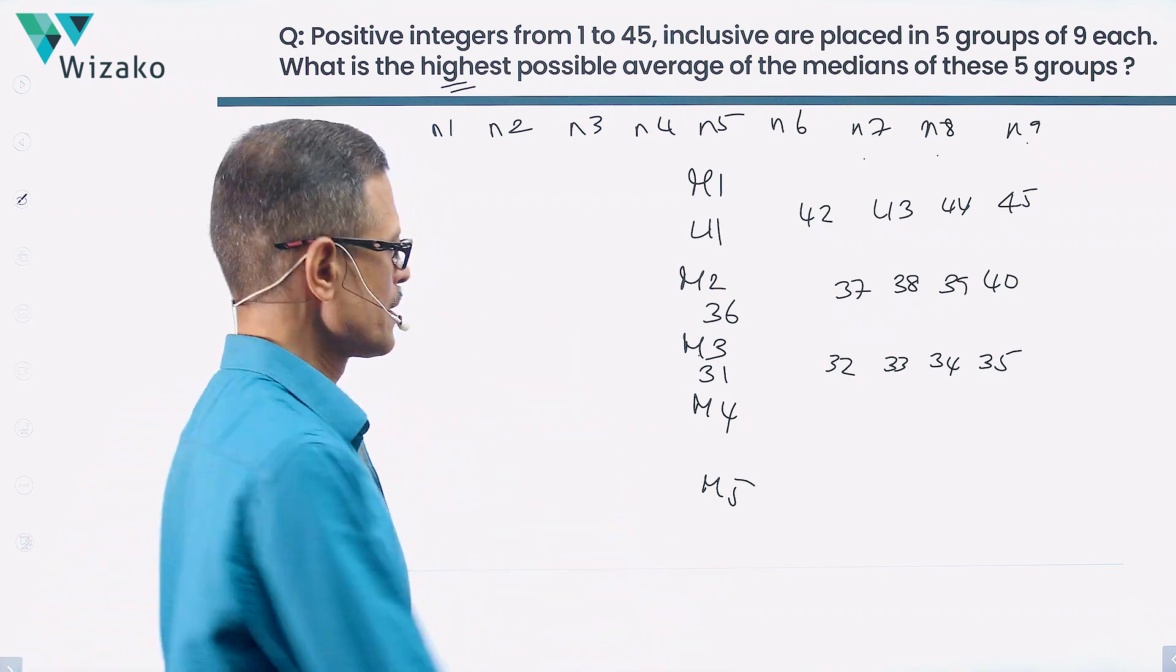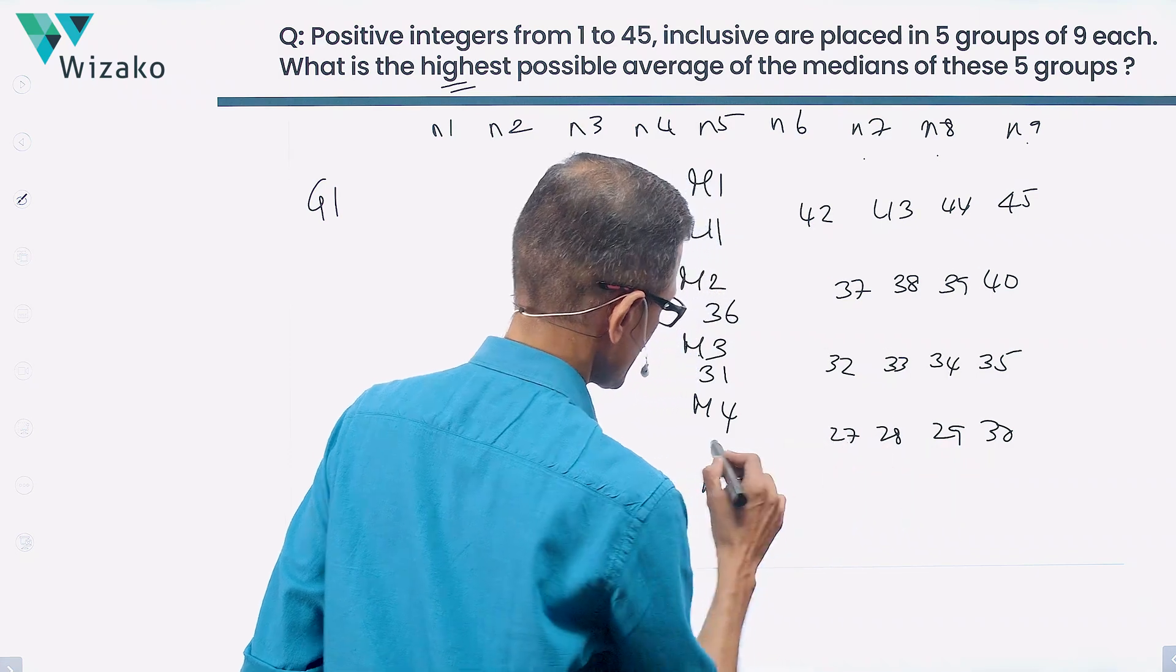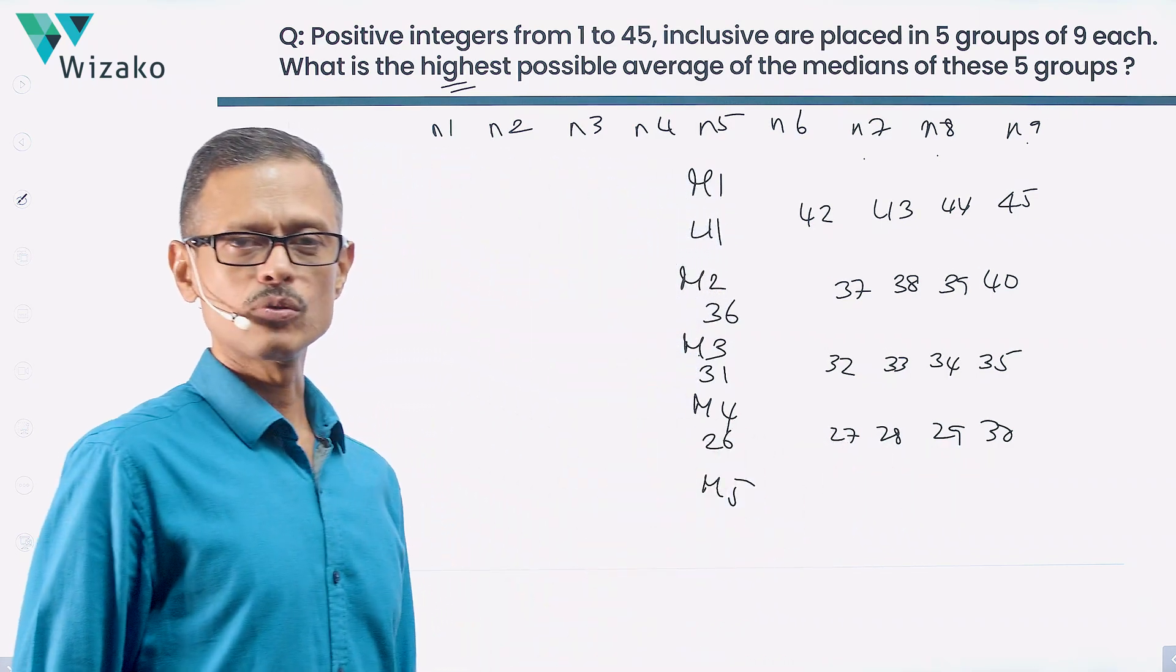We have numbers from 1 to 30 left. Place 30 here. 29, 28, 27. 26 is the median for the fourth group.